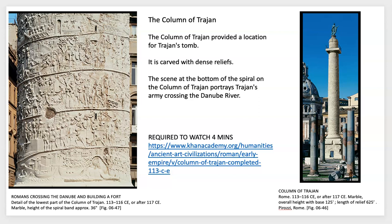The Column of Trajan is really important because it depicts the army and what they achieved — crossing a river and the significance of that, and the people involved. This video further describes the importance of this column and what it symbolized at the time.